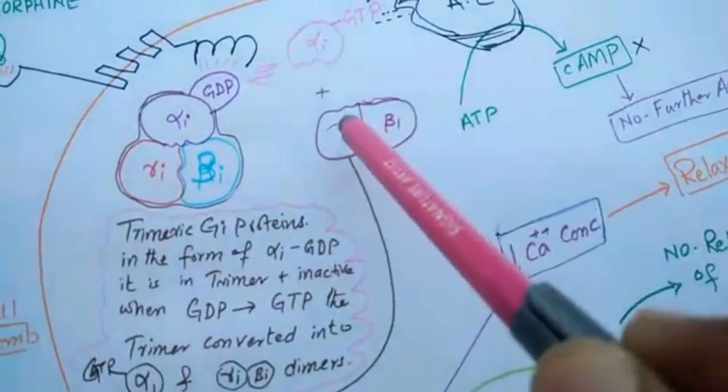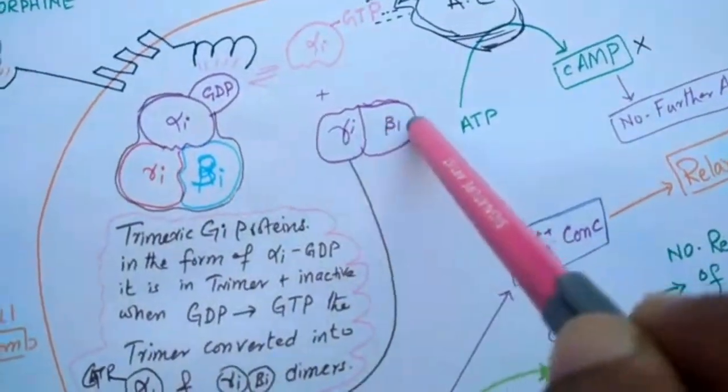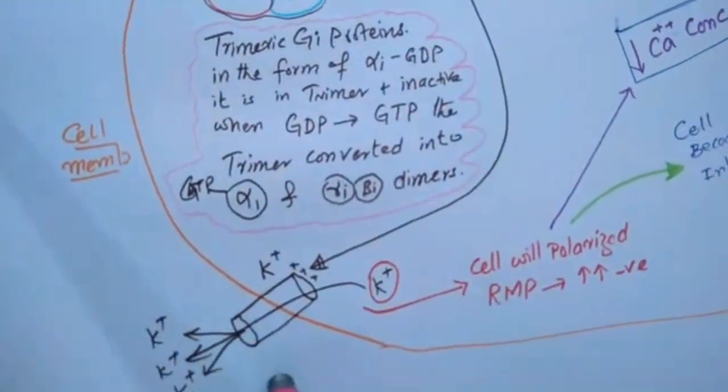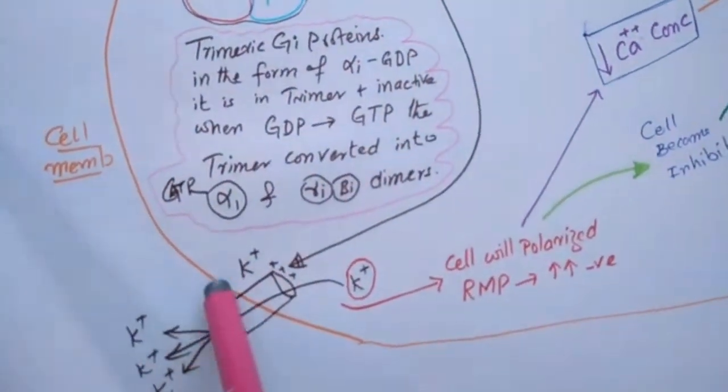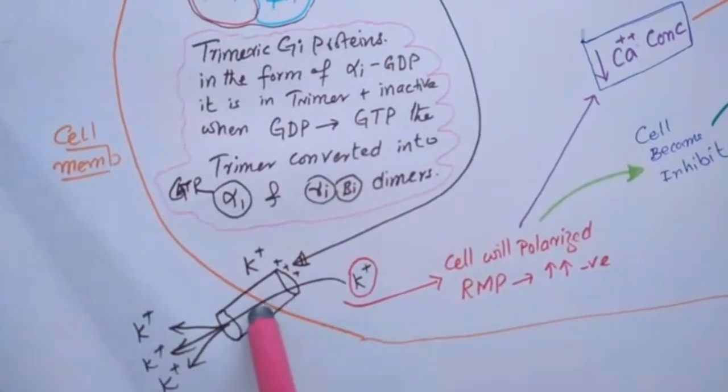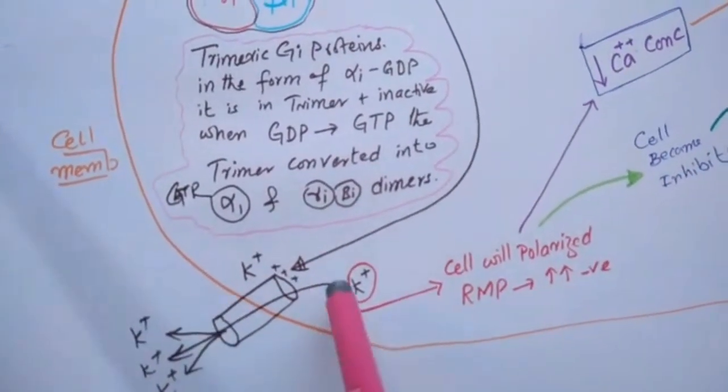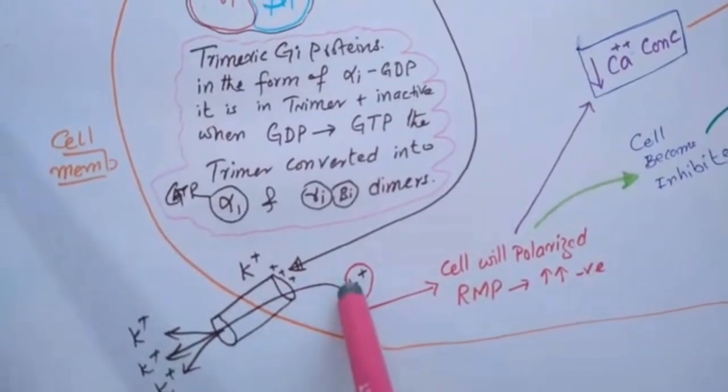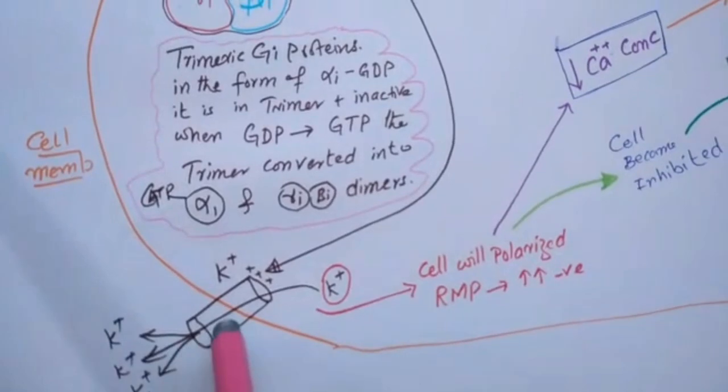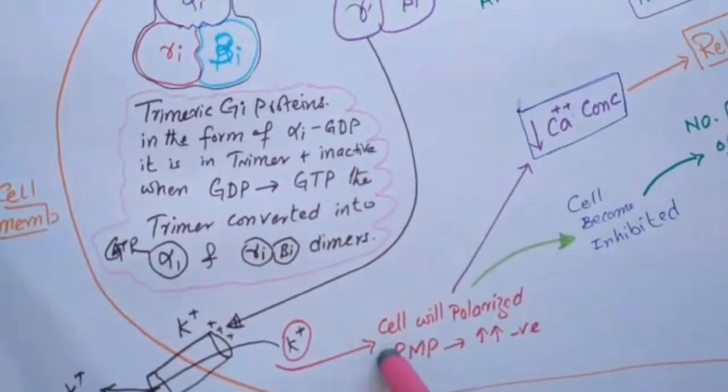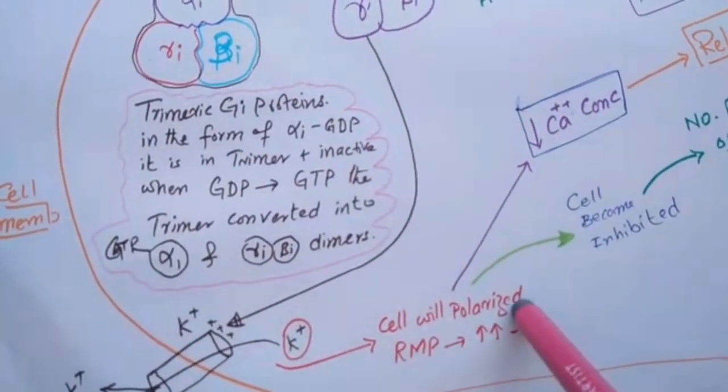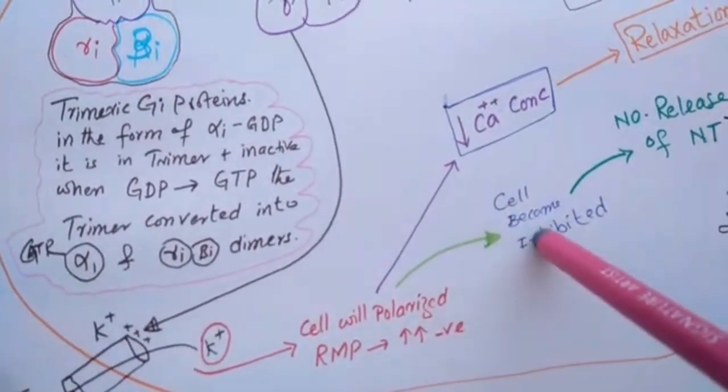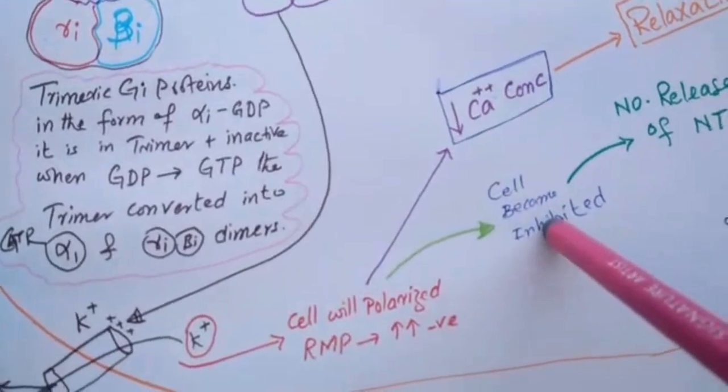But this dimer of alpha-i and beta-i stimulates the potassium channel. When the potassium channels open, the outflux of potassium occurs. When potassium outflux occurs, the cell will polarize and the resting membrane will become more electronegative.